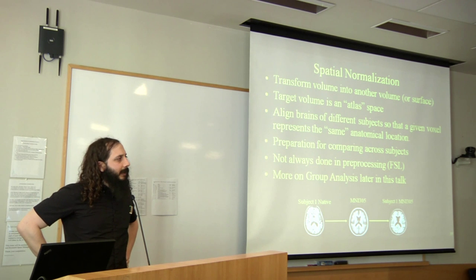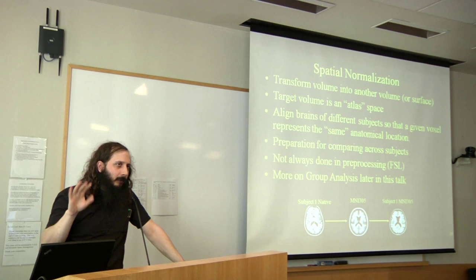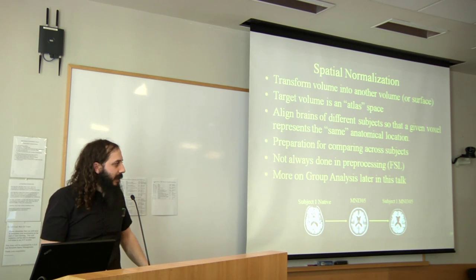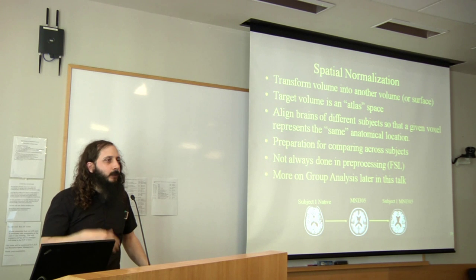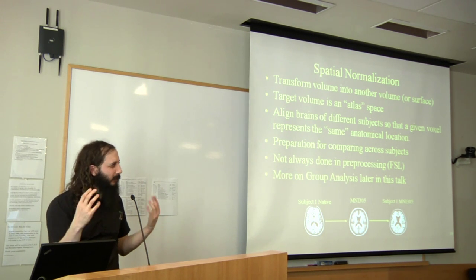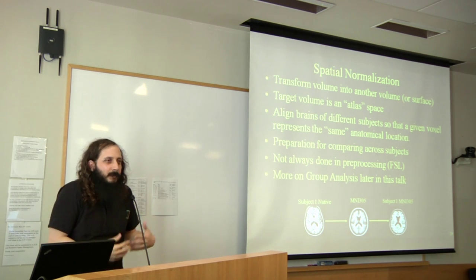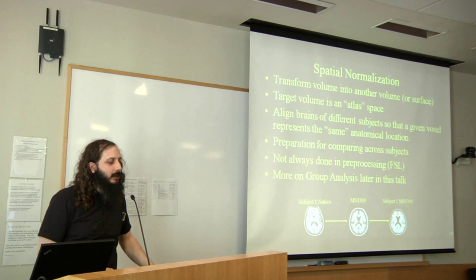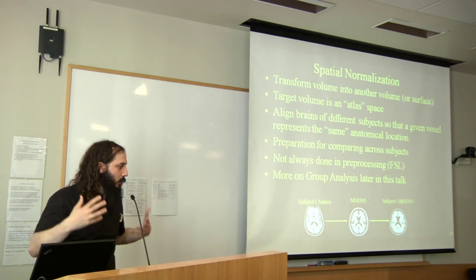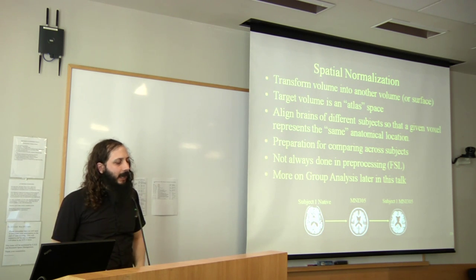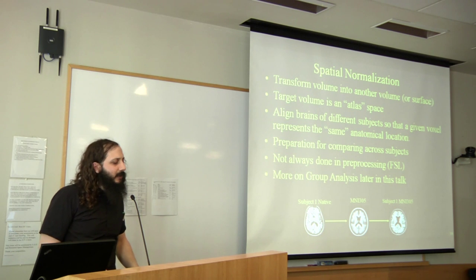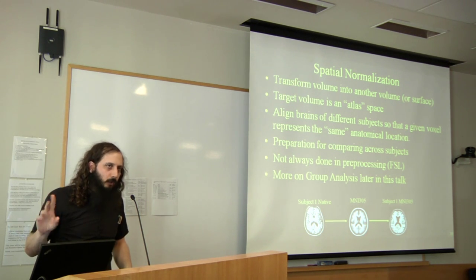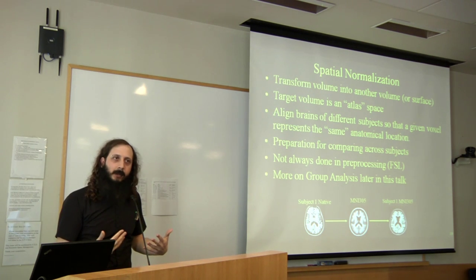Next is spatial normalization — you'll hear more about this, but it's part of pre-processing. In spatial normalization, we transform each individual's volume into another volume to make it easier to compare data across individuals. We register each individual subject to some atlas space, which can be either a volume space or a surface space. The goal is to align brains of different subjects so that a given voxel in any one subject represents the same anatomical location across the population. This is needed to prepare for comparing across subjects, though it can happen after pre-processing depending on which software package is used.